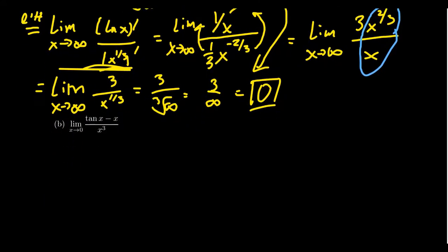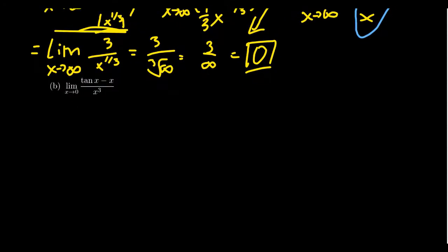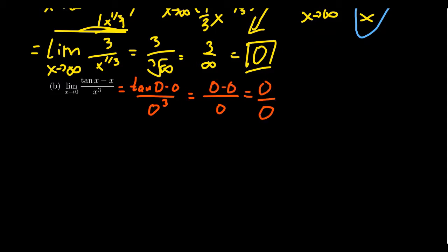Let's do one more example: the limit as x approaches zero of tangent of x minus x, all over x cubed. If we plug in x equals zero, we get tangent of zero minus zero all over zero cubed. Since tangent of zero is itself zero, this is the indeterminate form zero over zero. Division by zero is only a problem if you're not also multiplying by zero — since we have zero over zero, we can apply L'Hôpital's rule.